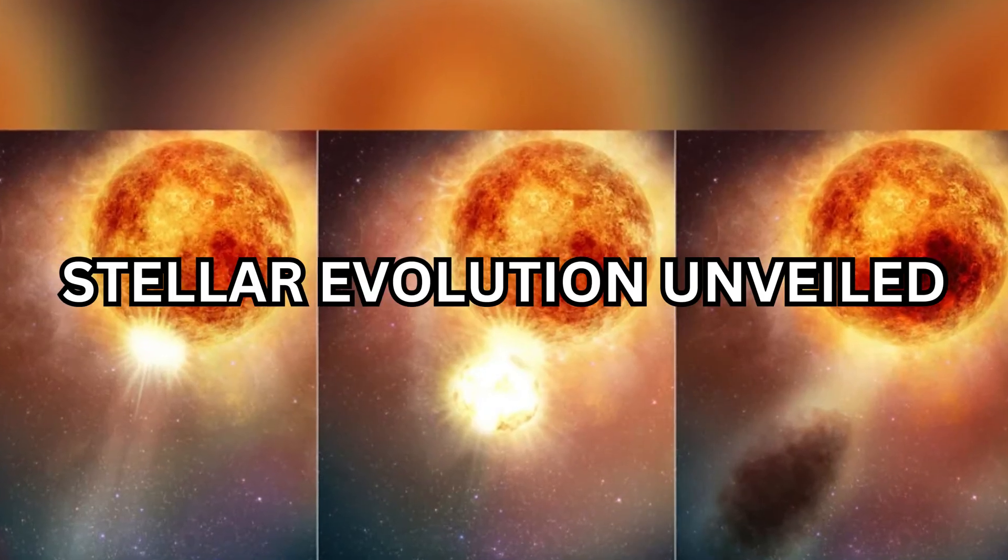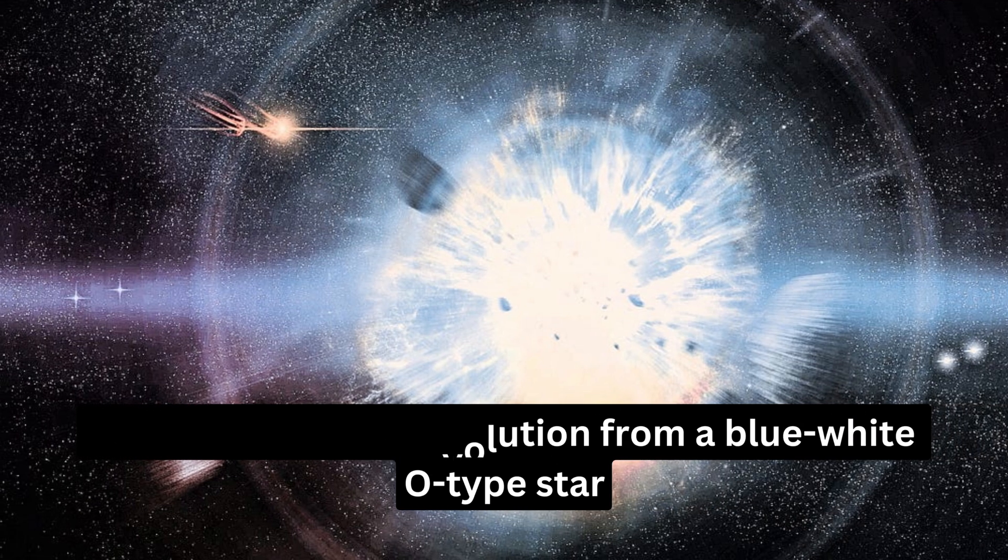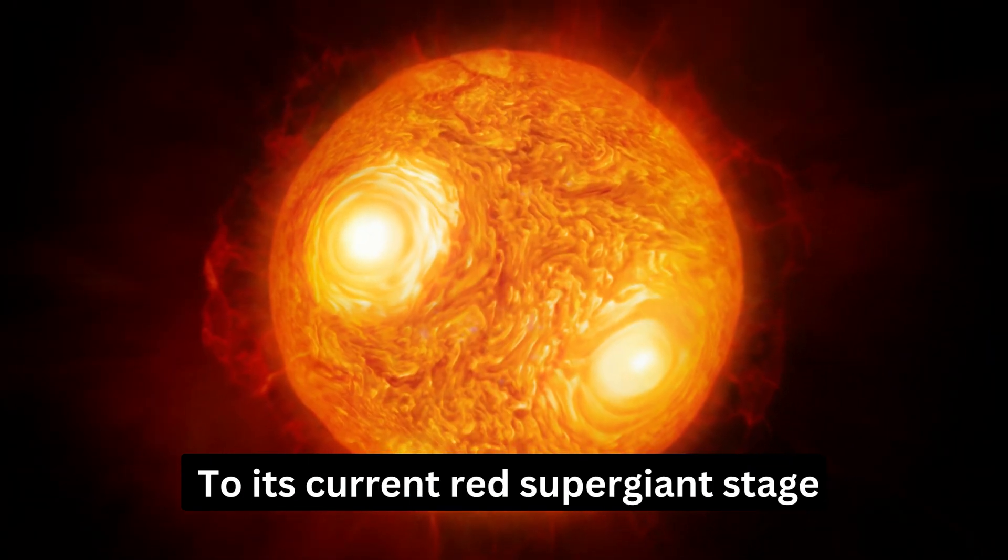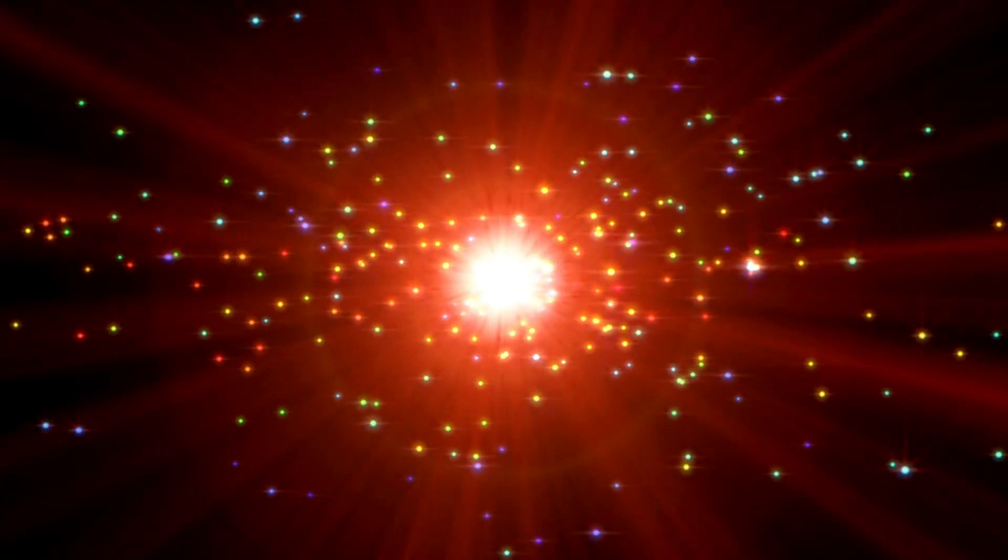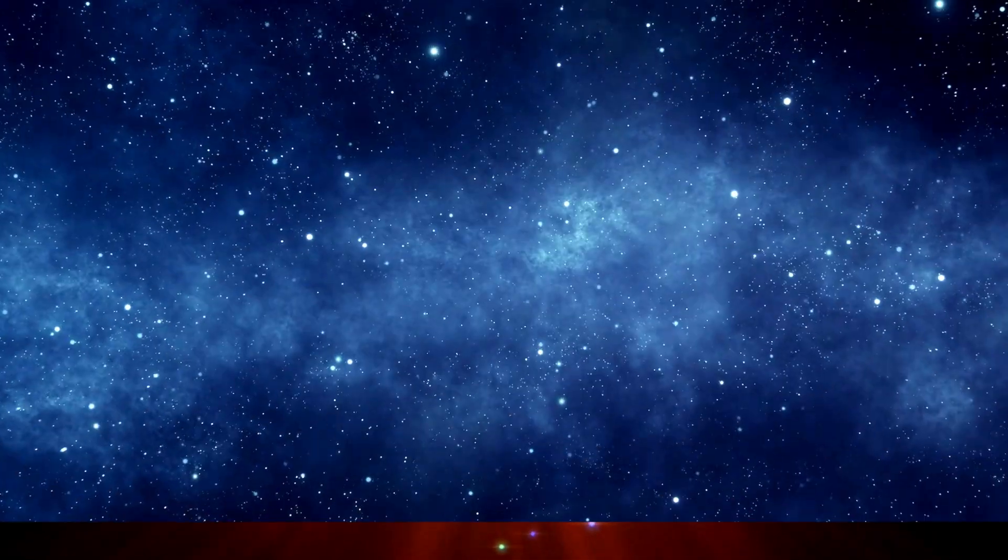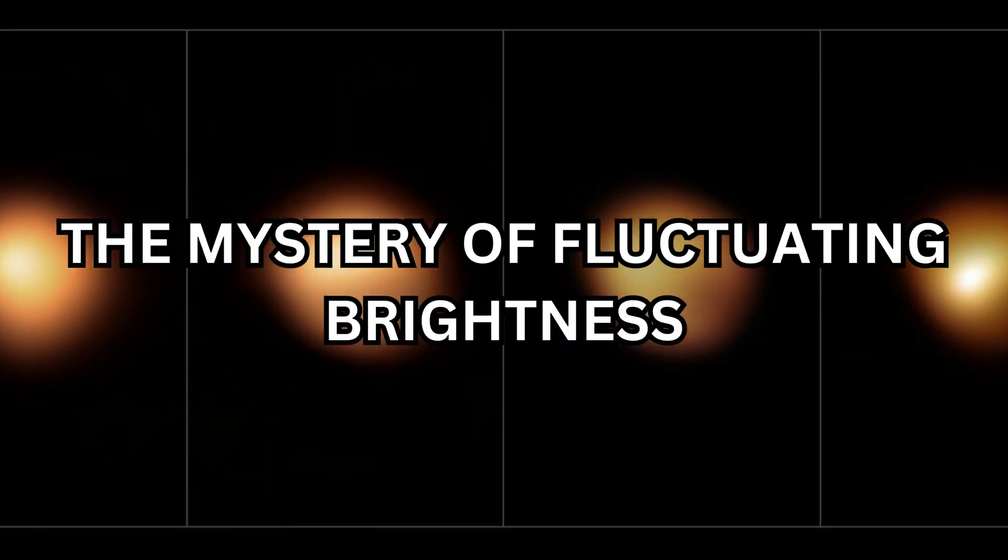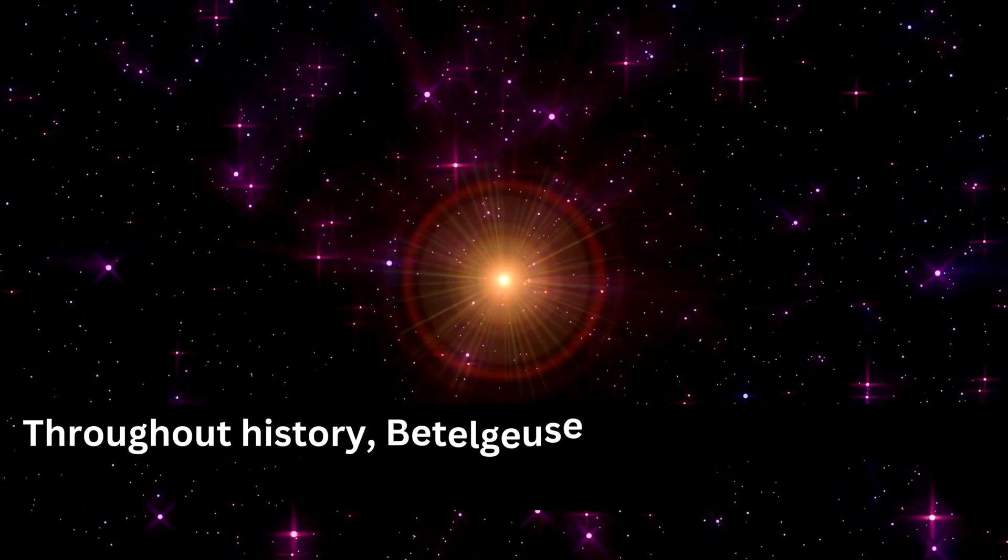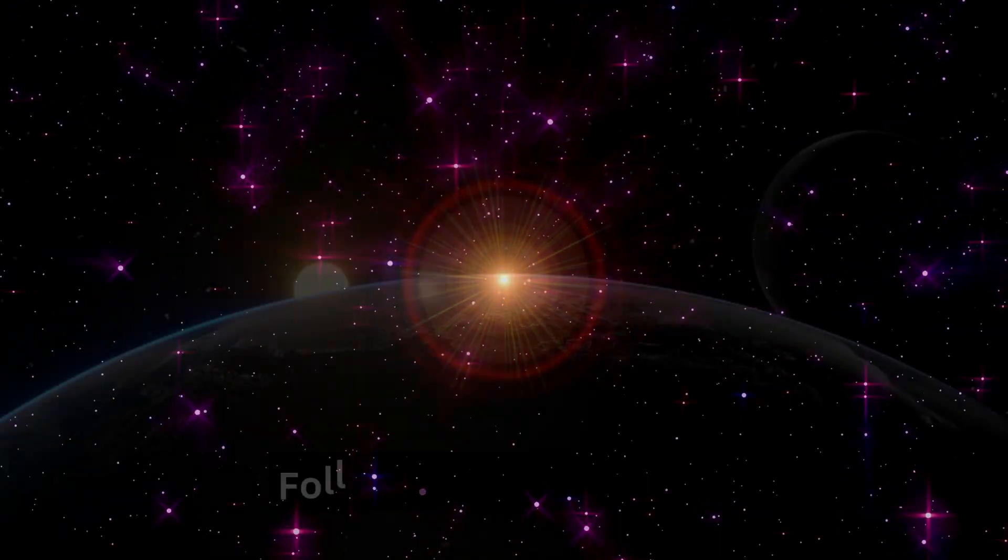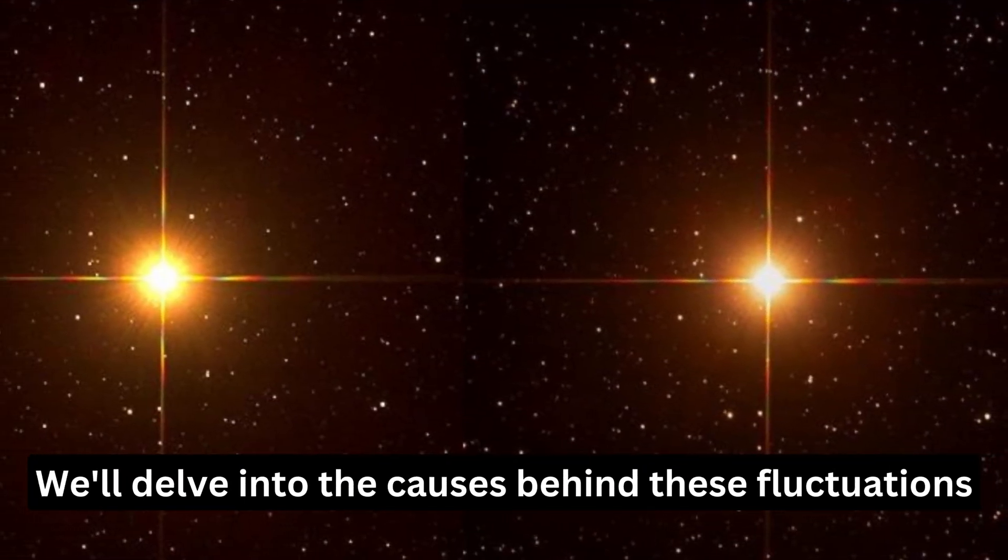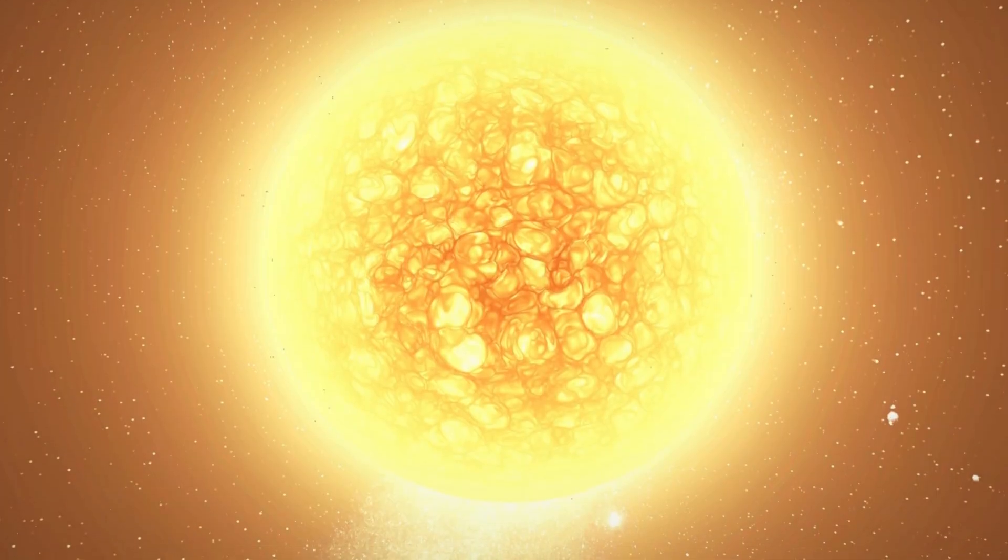Betelgeuse's rapid evolution from a blue-white O-type star to its current red supergiant stage is a testament to its massive birth weight. We'll explore how its initial mass dictated its brilliance and hastened its journey through stellar phases. Throughout history, Betelgeuse has exhibited periodic changes in brightness following distinct cycles. We'll delve into the causes behind these fluctuations and uncover the recent anomaly in its behavior.